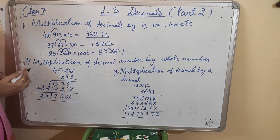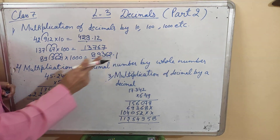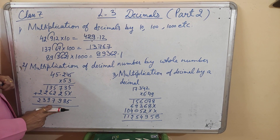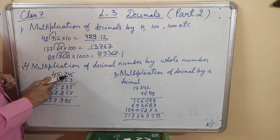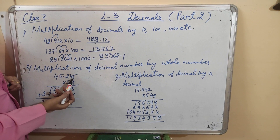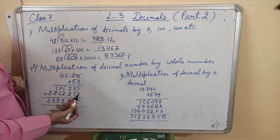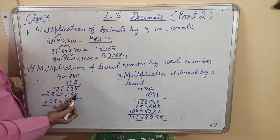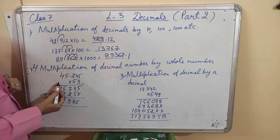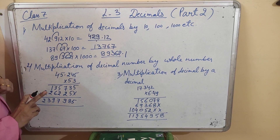Second rule: when we have to multiply a decimal number with a whole number, first we have to do the simple multiplication. For example, 45.245 multiplied by 53. First we multiply the number by 3, then we put the sign of cross under the first digit and multiply by 5. After doing the multiplication, we do the addition. This is the simple multiplication.